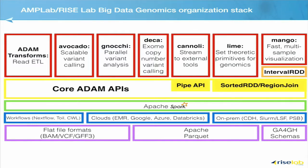Here's our stack. The AMP lab's big claim to fame is development of Apache Spark, the toolkit for big data analysis. We've built over the past five or six years the set of libraries and APIs called ADAM. It sits on top of Spark. We like to think of ADAM as your way of doing genomics on Spark.